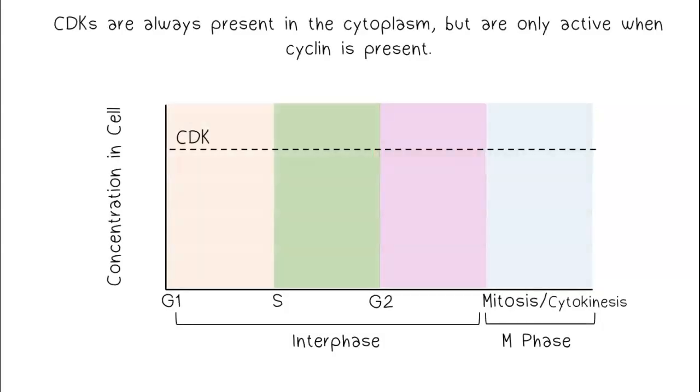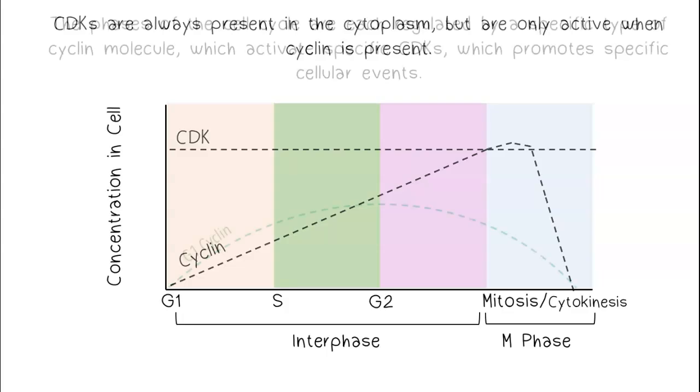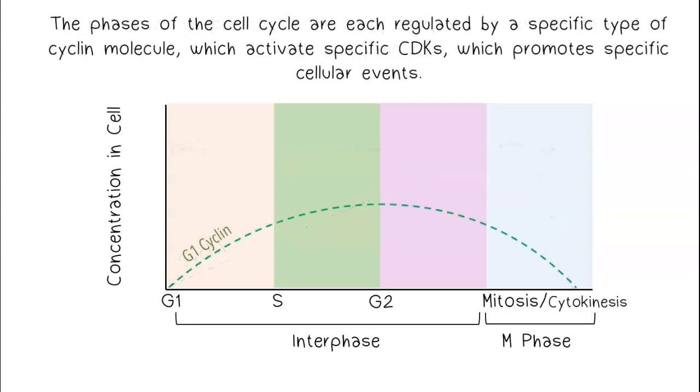CDKs are always present in the cytoplasm but are only active when cyclin is present. The phases of the cell cycle are each regulated by a specific type of cyclin molecule which activates specific CDKs which promotes specific cellular events.